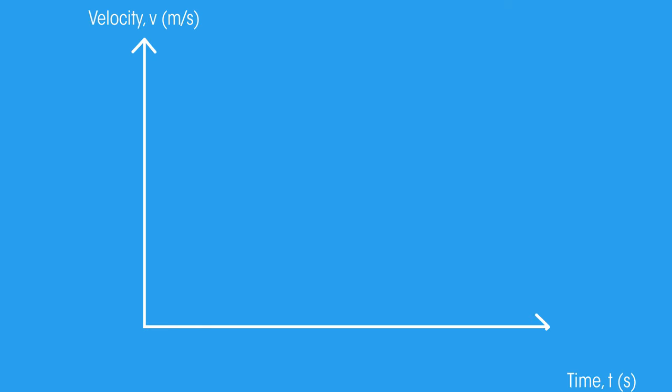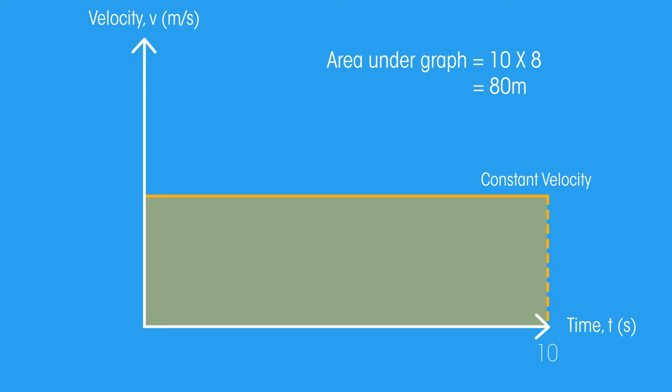Let's start by looking at a simple velocity time graph. To find the area underneath the line, multiply the value on the horizontal axis with the value on the vertical axis. We are multiplying together the velocity of the object and the time it has travelled for.